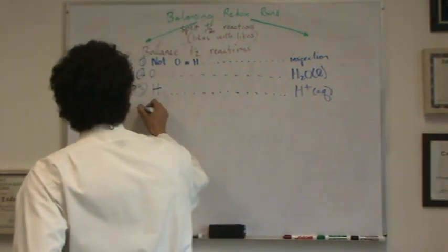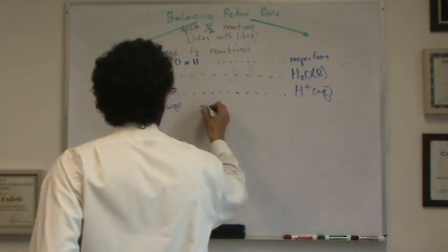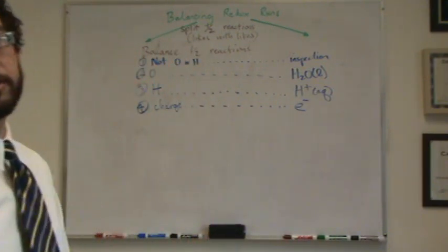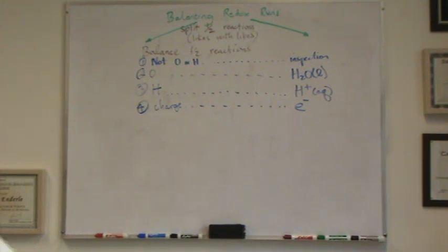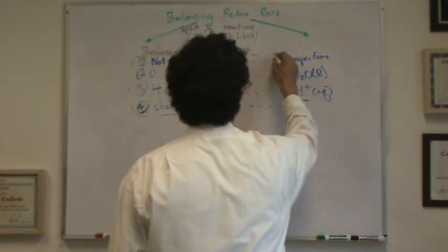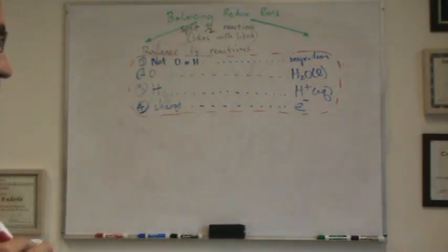And step four, you balance the charge. How do you balance a charge? You balance a charge with electrons. Electrons don't have a state. They're just little tiny particles. And there's plenty of them to go around, believe me, in a solution. So you're just going through a technique to balance what is already balanced in a solution. So this here is your half-reaction balancing method. You need these four steps to be locked and loaded in your brain. Those are the four steps.